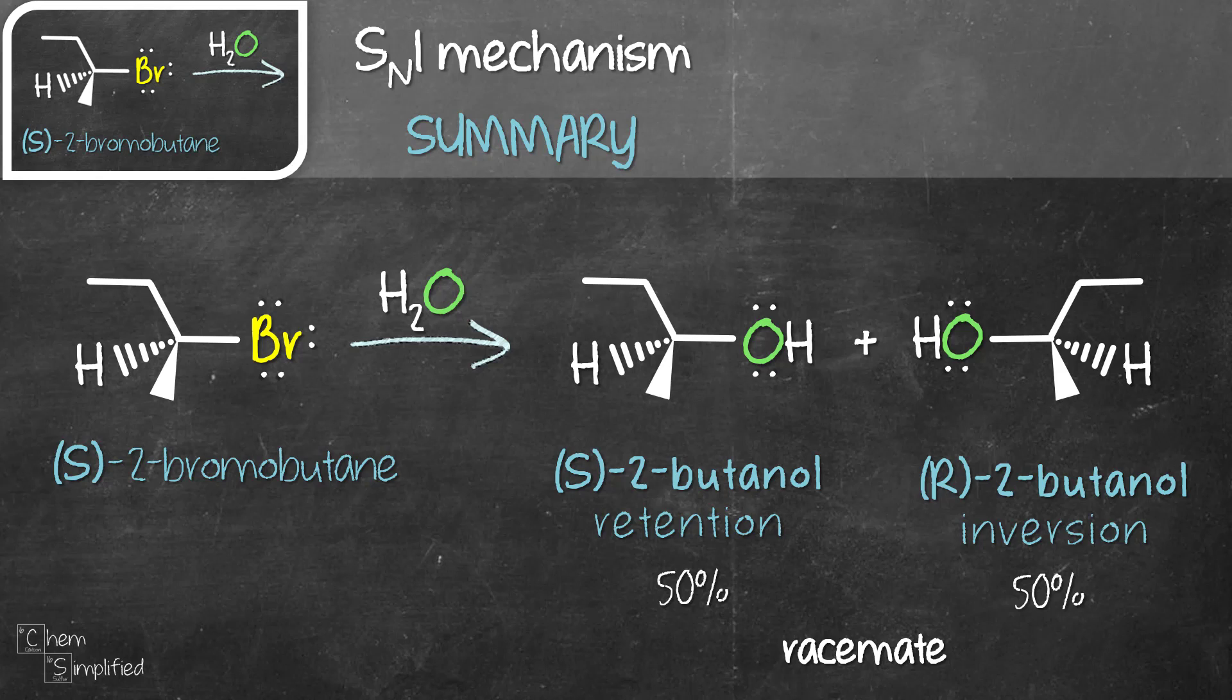The highlight of SN1 reaction is the formation of carbocation at the very beginning that is rate determining, and the products formed are going to be racemate which is 50-50. With that, we're done discussing SN1 reaction.